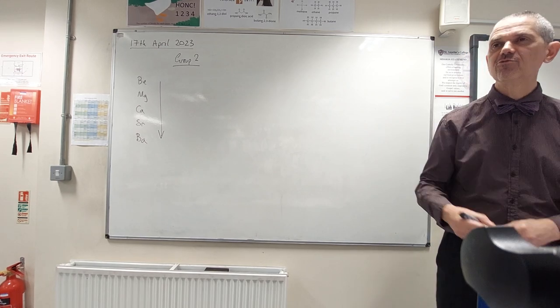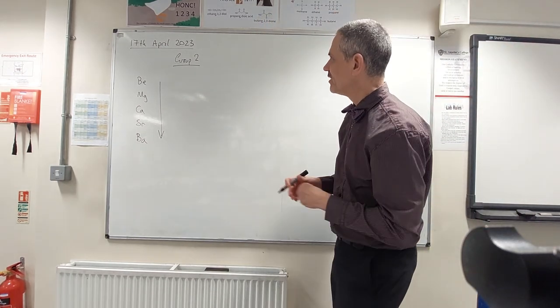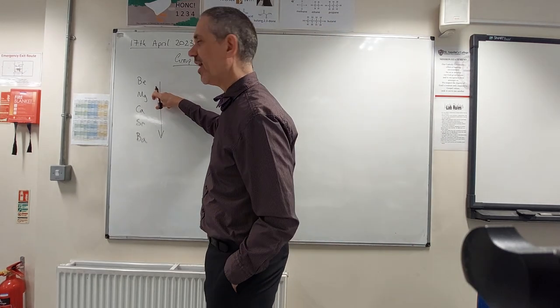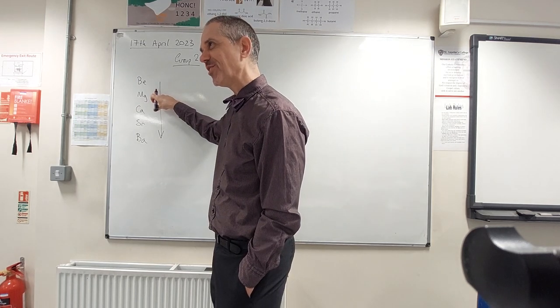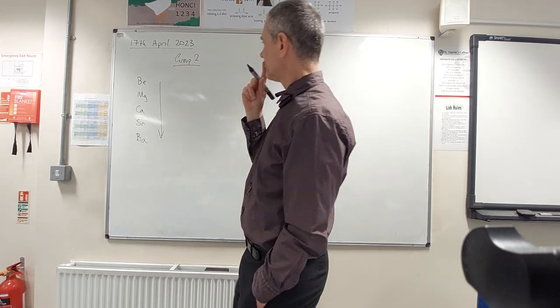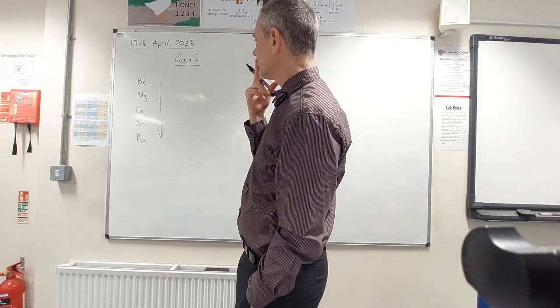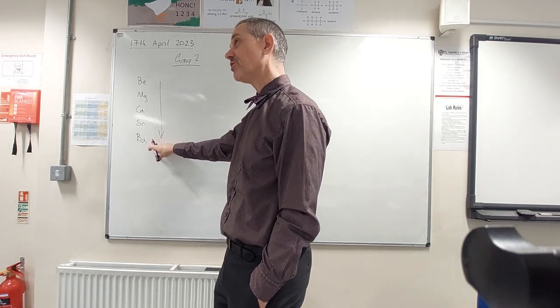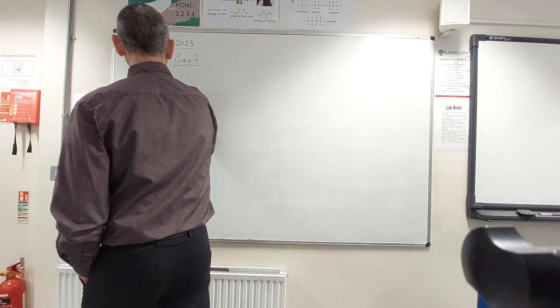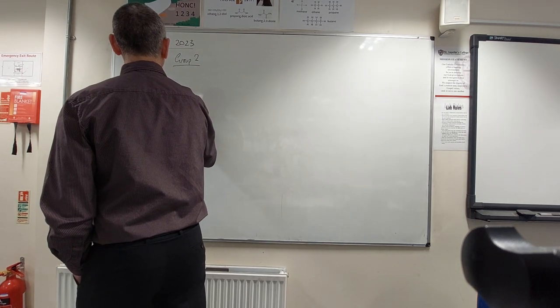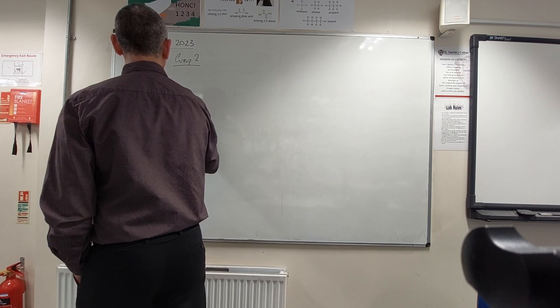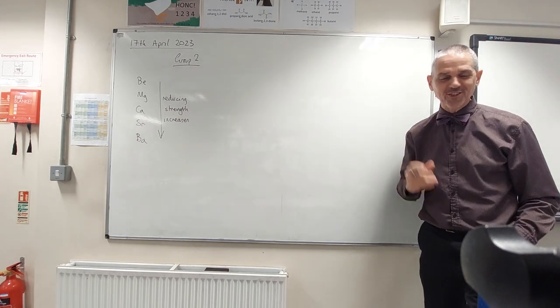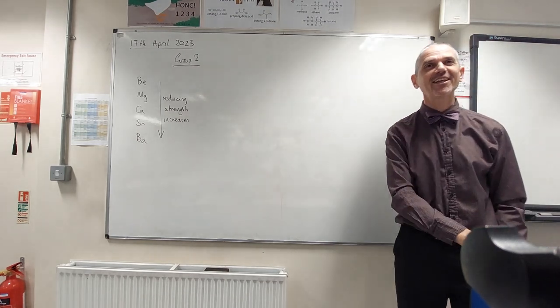Reducing strength increases. Reducing strength increases. Okay, so, that was a bit out there. Yeah, I'm having to think about this now. Is that right? Reducing strength increases. So, barium loses electrons more readily than magnesium. Yes, that is right. Okay, good man. Okay, I was waiting for one of the big three, but that's great, you know, that's great. Knock it out of the park on the first ball.